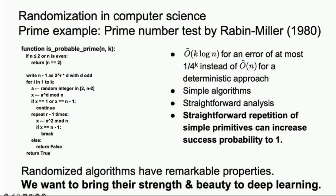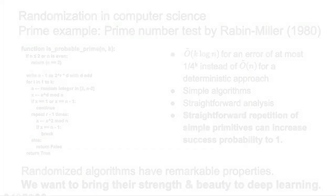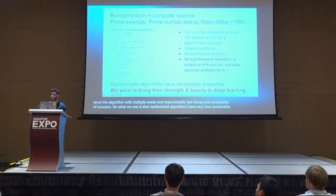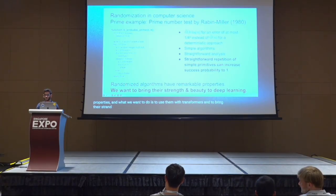What we see is that randomized algorithms have very nice remarkable properties, and what we want to do is use them with transformers and bring their strength and beauty to the world of deep learning.